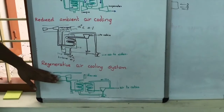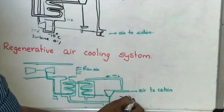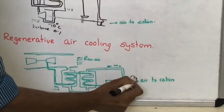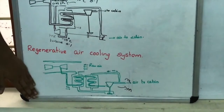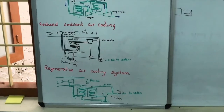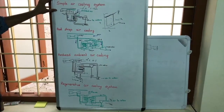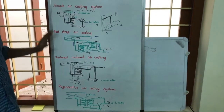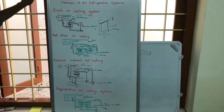If the total mass is m, then m1 is supplied to the cabin and m2 is taken back for the second heat exchanger — this is why it is called the regenerative air cooling system. In summary, starting from the simple air cooling system, specific differences are introduced to obtain three other types of cooling systems: bootstrap, reduced ambient, and regenerative. All of these are used in aircraft systems.